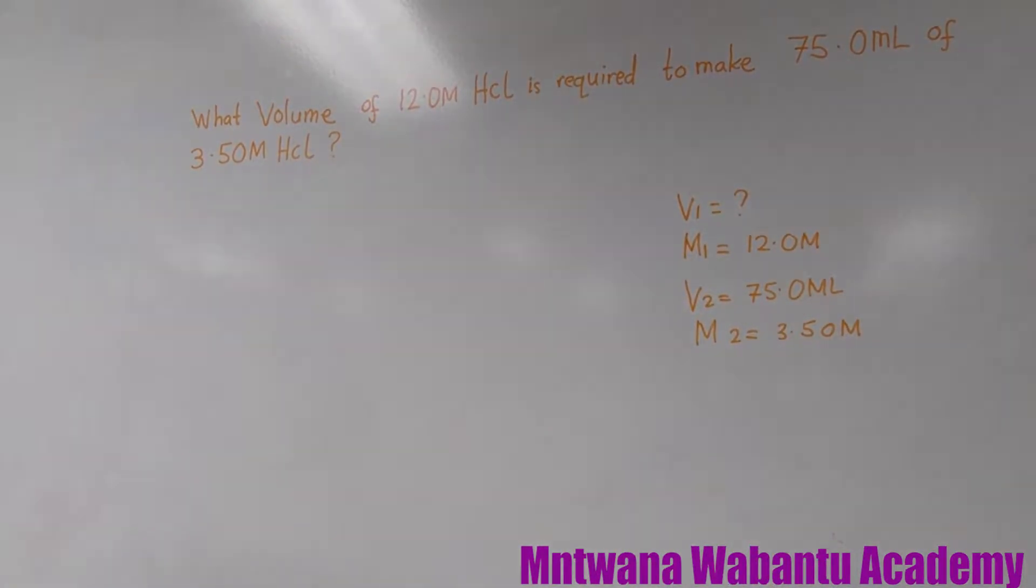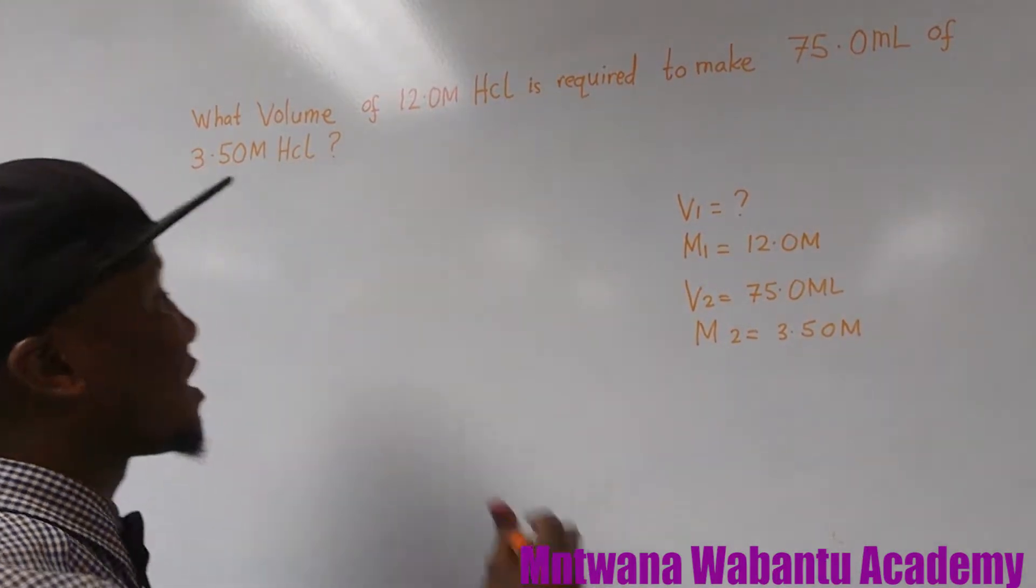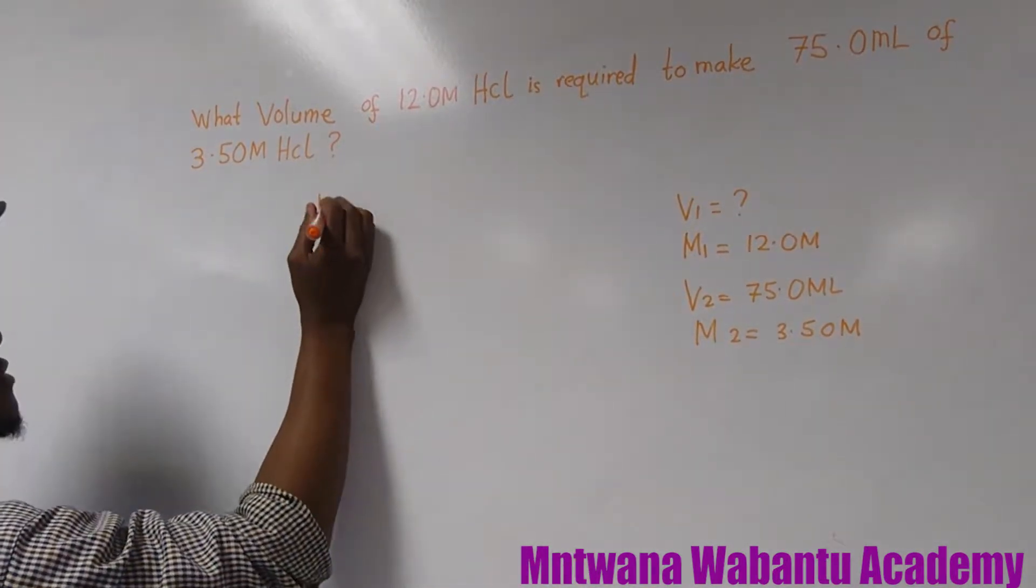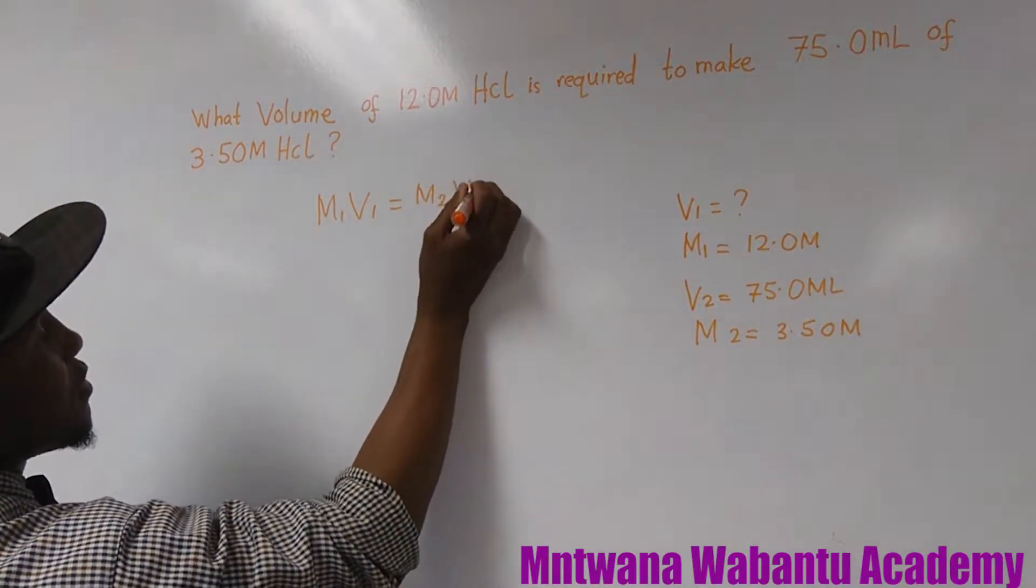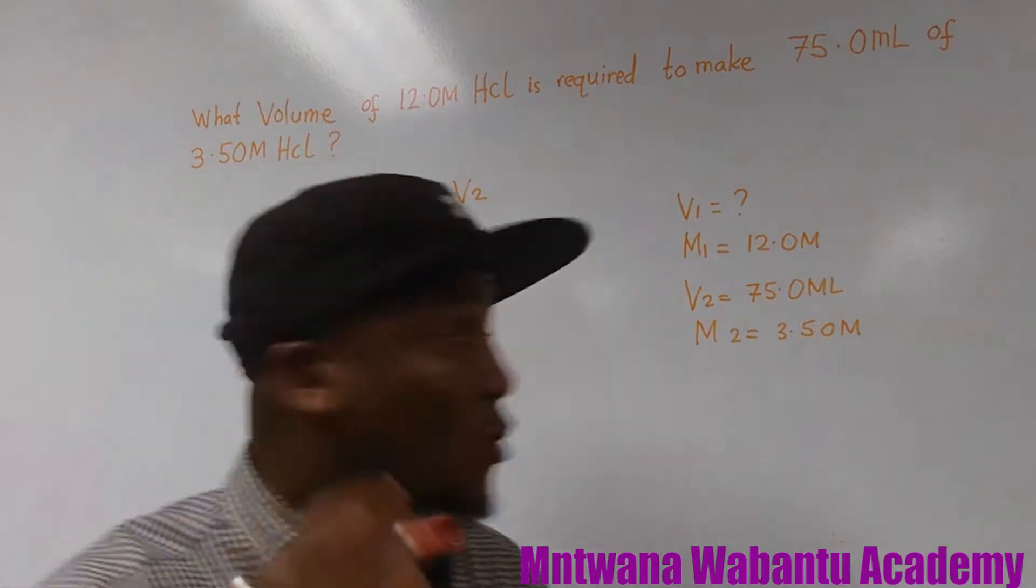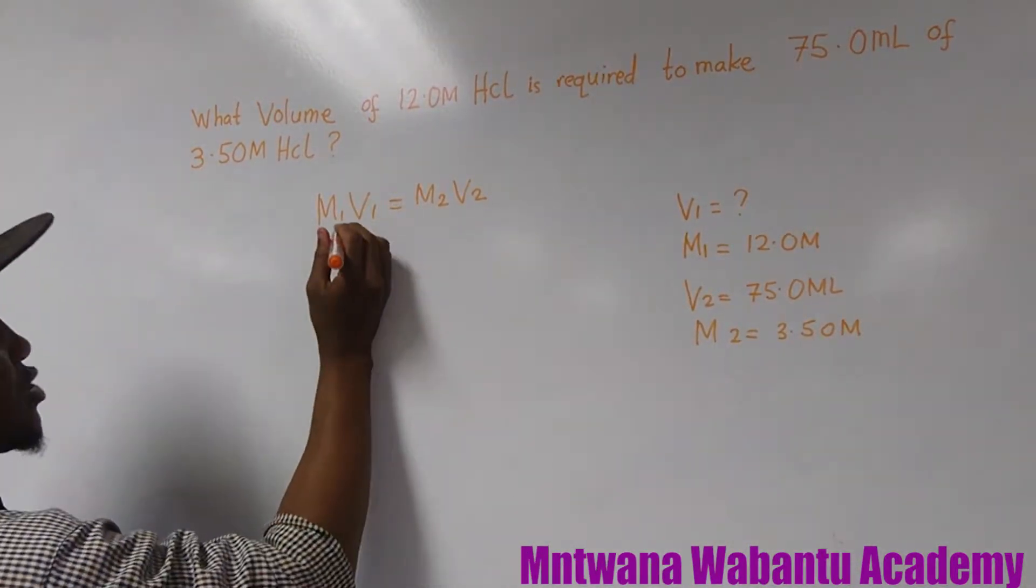So now you're going to apply a very simple formula. Whenever you have a dilution to volume, then this formula you have to use. You say M1V1 equals M2V2. So we're going to have to plug it in. But what do we want? We want V1, which you don't know. So you have to make it subject.